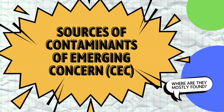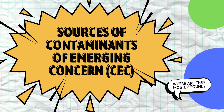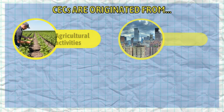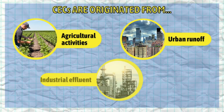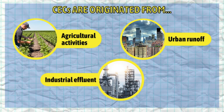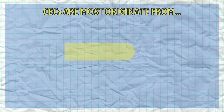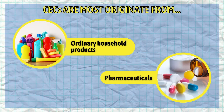Next, let's learn more on the sources of CEC. Where do you think they are mostly found? So basically, CEC commonly originates from agricultural activities, urban runoff, industrial effluent, ordinary households, as well as pharmaceutical products.